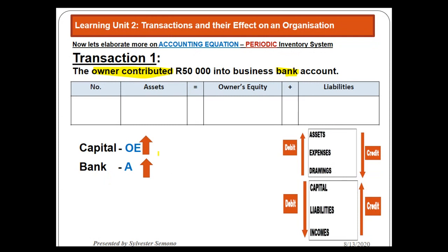Now we consult our rules. I check where capital appears in the rules box and find the upward arrow — it is on the credit side, so capital will be credited. Knowing one side makes the other obvious. For bank, it is an asset; I find assets in the box and check the upward arrow — assets increase on the debit side. So bank is debited.